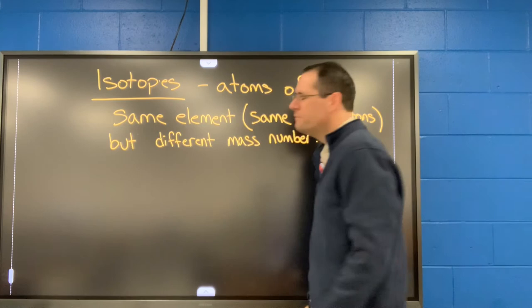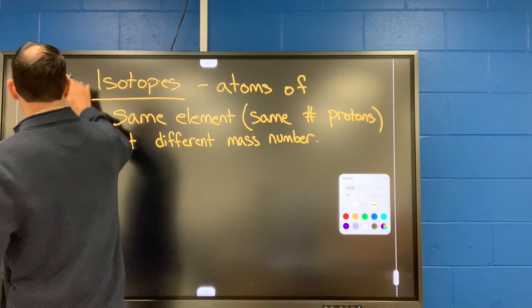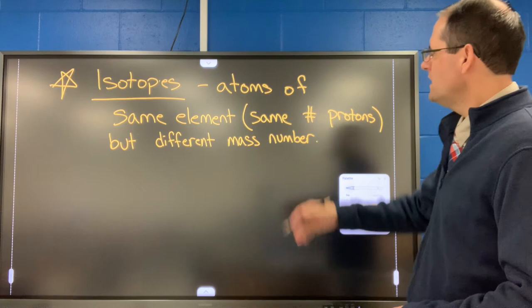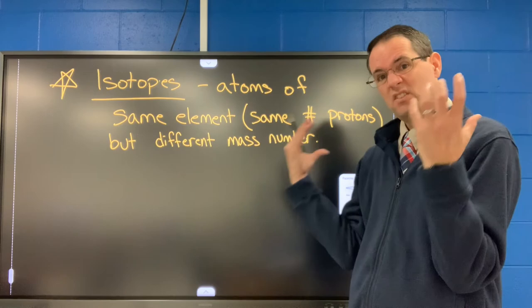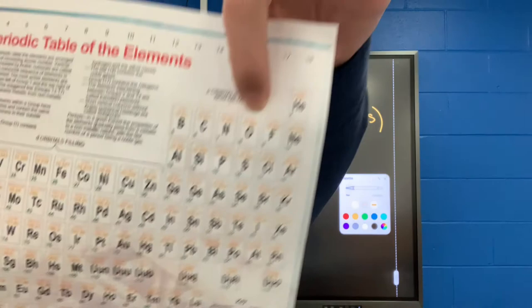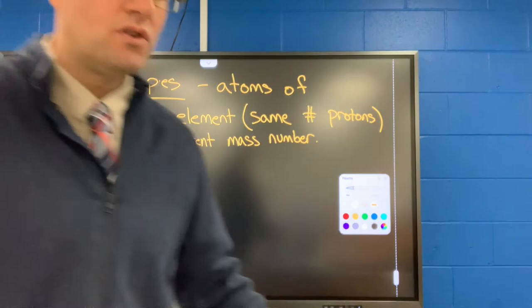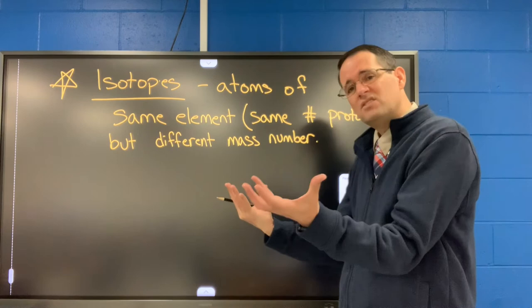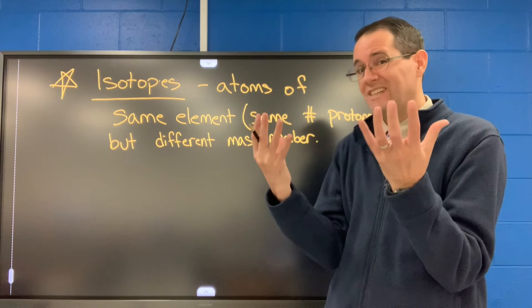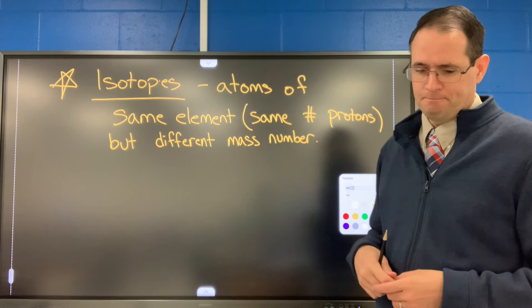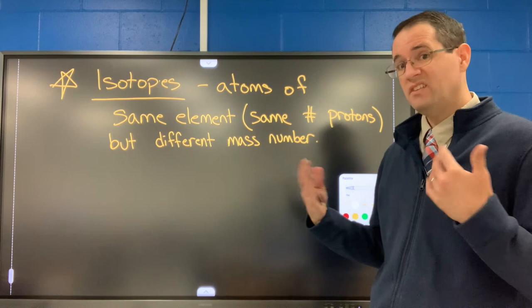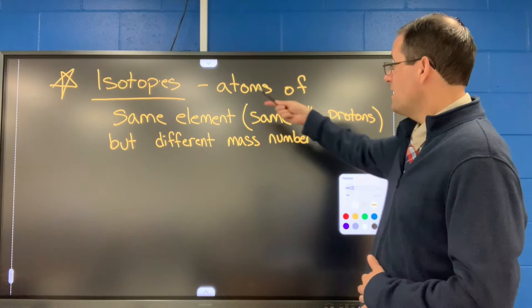Isotopes — a very key term. Isotopes are defined as atoms of the same element that have different numbers of neutrons in the nucleus. So we could have an oxygen atom with eight protons in our right hand and another oxygen atom with eight protons in our left hand — same element — but one could have seven neutrons and another could have eight neutrons. They would have different weights but still have the same element name or symbol. They're called isotopes.